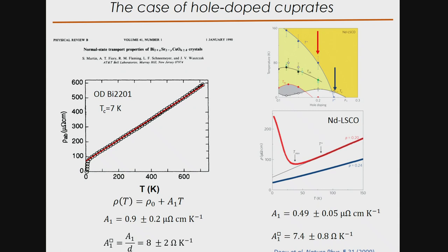Another system where T-linear resistivity has been highlighted is Nd-LSCO. In this system p* is believed to be around 23 percent. If you measure resistivity — suppressing superconductivity at low temperature — at 24 percent, the resistivity remains linear down to very low temperature. But as soon as you cross p* and measure at 20 percent, there is an upturn attributed to the opening of the pseudogap. The slope at 24 percent gives A₁² of the order of 7.4 Ω/K, very similar to the Bi2201 sample.